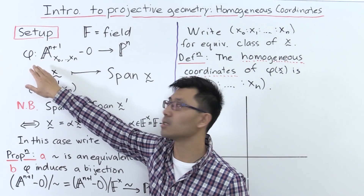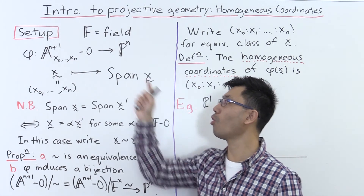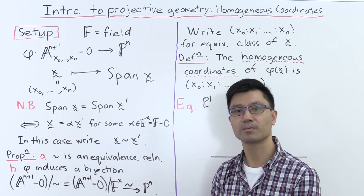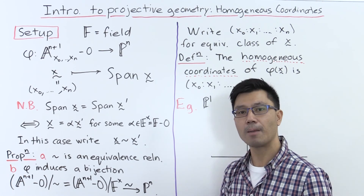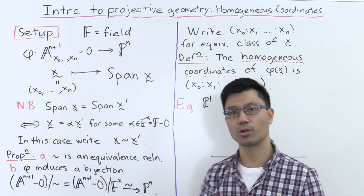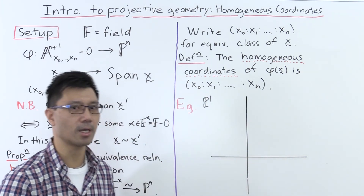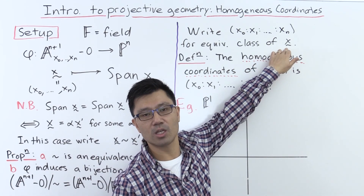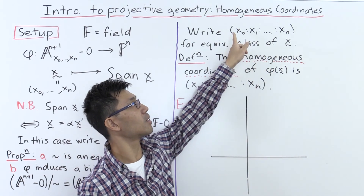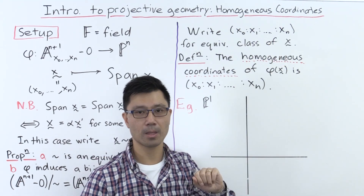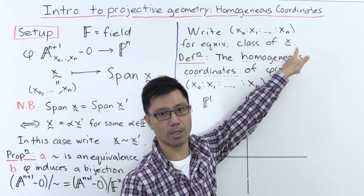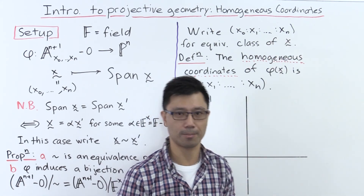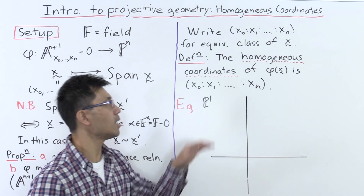This gives a wonderful new interpretation of projective n-space: you look at all the non-zero elements inside affine n+1 space and look at the orbits under the action of the multiplicative group. With this interpretation, it becomes very natural to present what's called homogeneous coordinates.